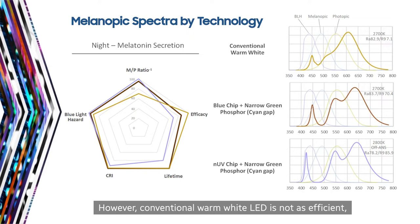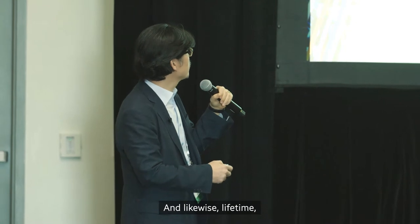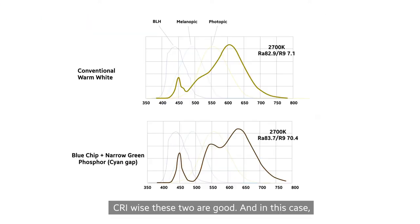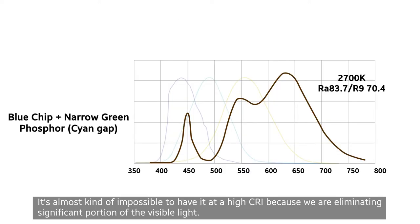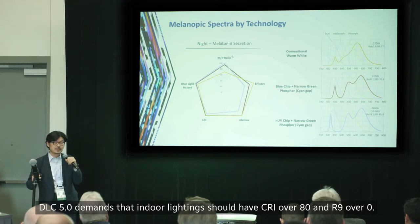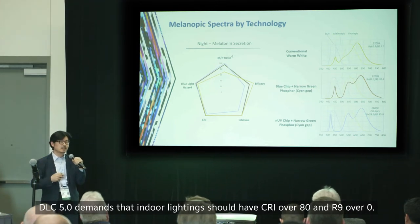Conventional warm white LED is not as efficient. Lifetime-wise, these two are kind of similar; however, the near-UV will have a little bit of penalty. CRI-wise, these two are good. In this case, it's almost impossible to have high CRI because we are eliminating a significant portion of the visible light. DLC 5.0 demands that indoor lighting should have CRI over 80 and R9 over 0.